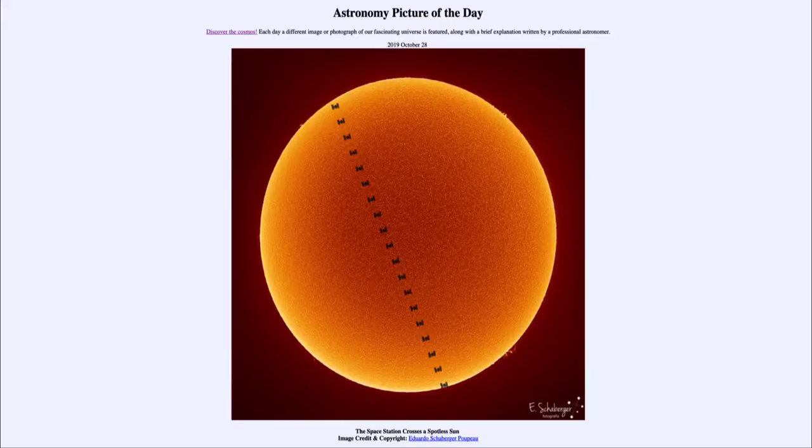Greetings and welcome to the introduction to astronomy. One of the things that I like to do in each of my introductory astronomy classes is to begin the class with the astronomy picture of the day from the NASA website, apod.nasa.gov/apod. Today's picture for October 28th, 2019 is titled The Space Station Crosses a Spotless Sun.